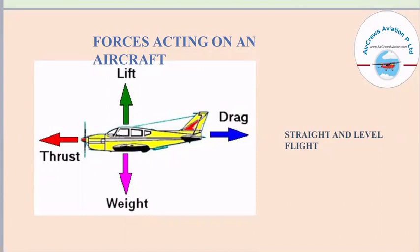This picture is of an aircraft while in steady level flight, a straight and level flight. Here we can see the upward force acting on an aircraft is known as lift. Opposite to that, the downward force which acts on an aircraft is known as weight. The force that acts in the forward direction is thrust and opposite to that is drag. For an aircraft to be in steady level flight, lift is equal to weight and thrust is equal to drag.